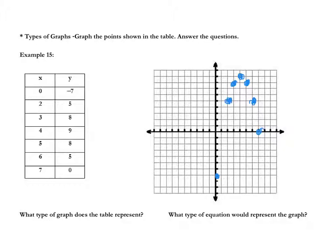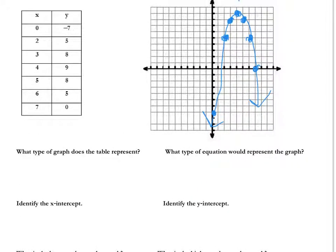Students often struggle with distinguishing absolute value from quadratic. Remember, with absolute value it's created by two straight edges. Could you draw a straight line from the top to the bottom here? The answer is no, so this is going to be a U-shaped graph — a parabola — which means the table represents a quadratic.